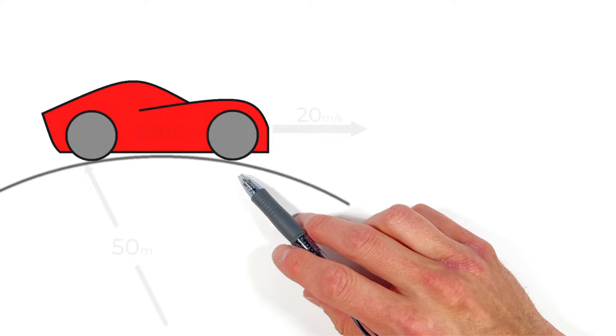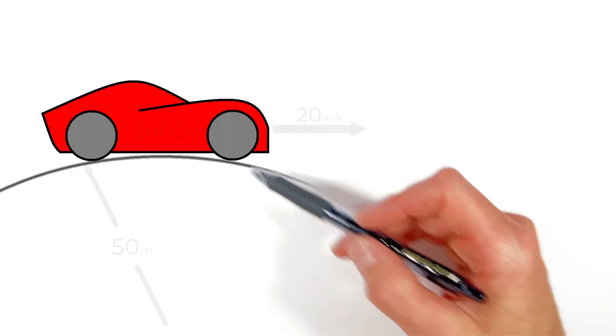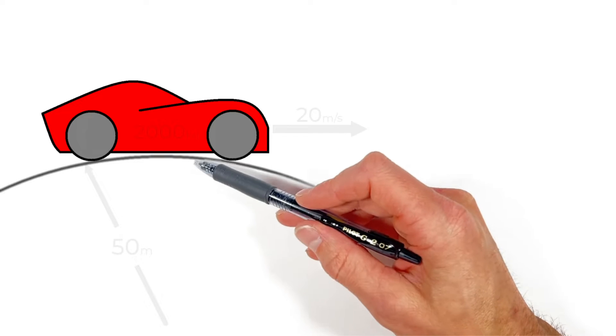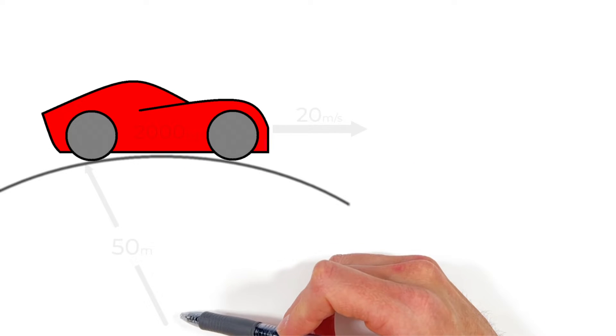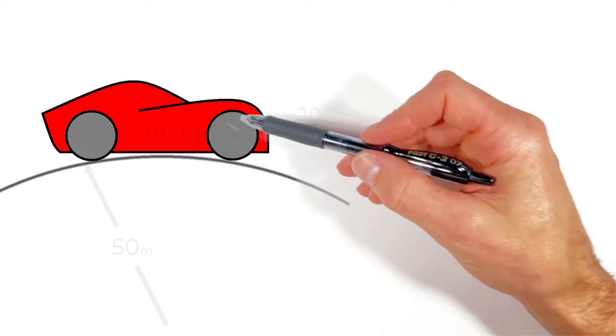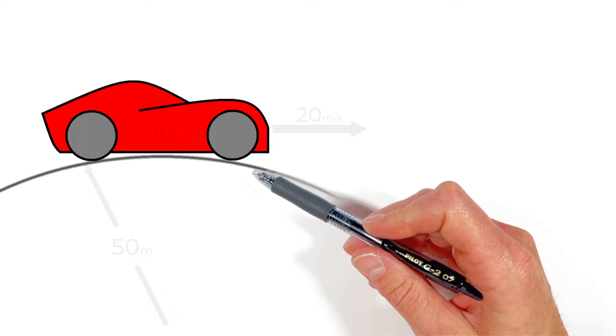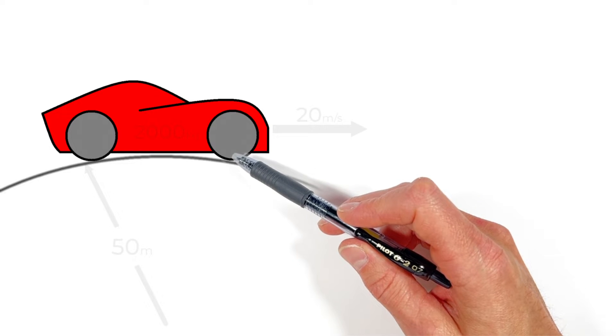The issue in this problem however is that we don't have a single force which is acting centripetally pulling this car toward the center of the circle which is actually down here in the center of this arc. Instead we have multiple forces acting on the car and together they all contribute to the total centripetal force.